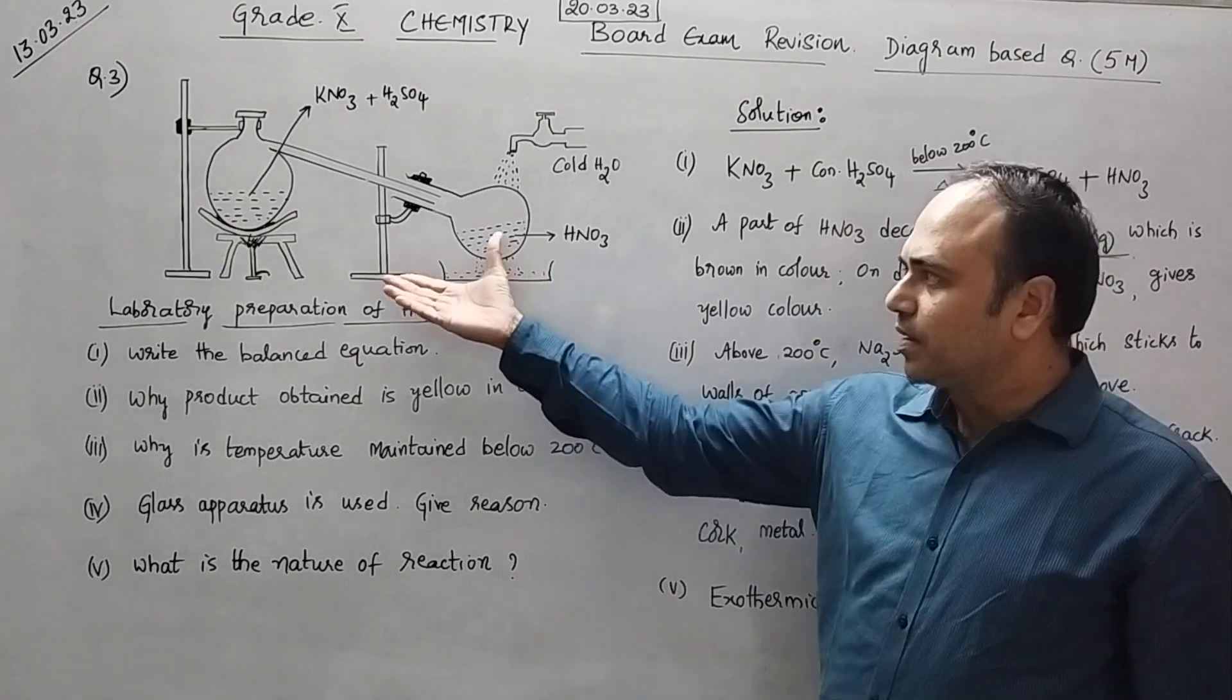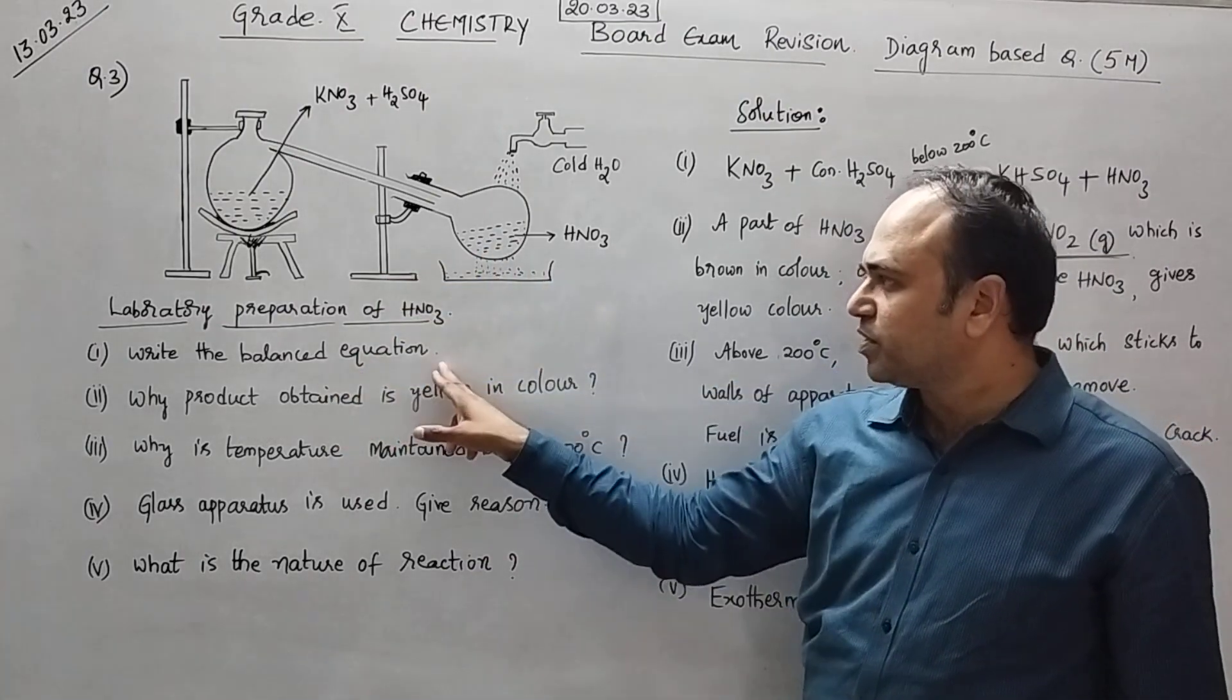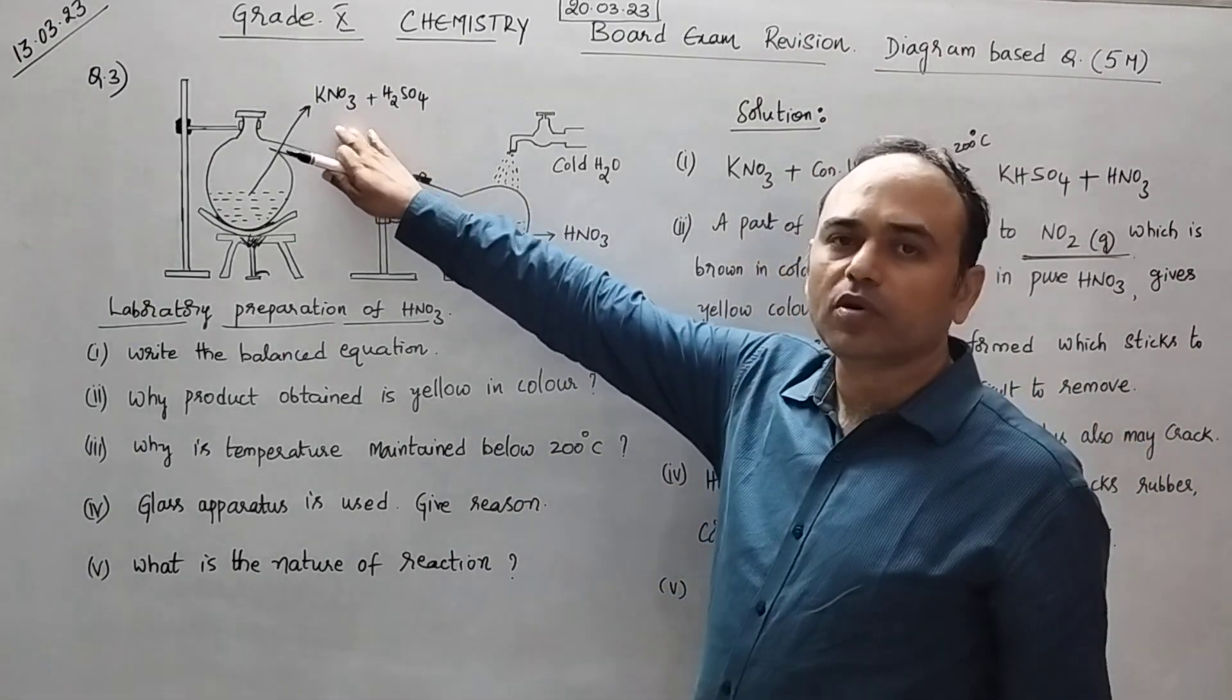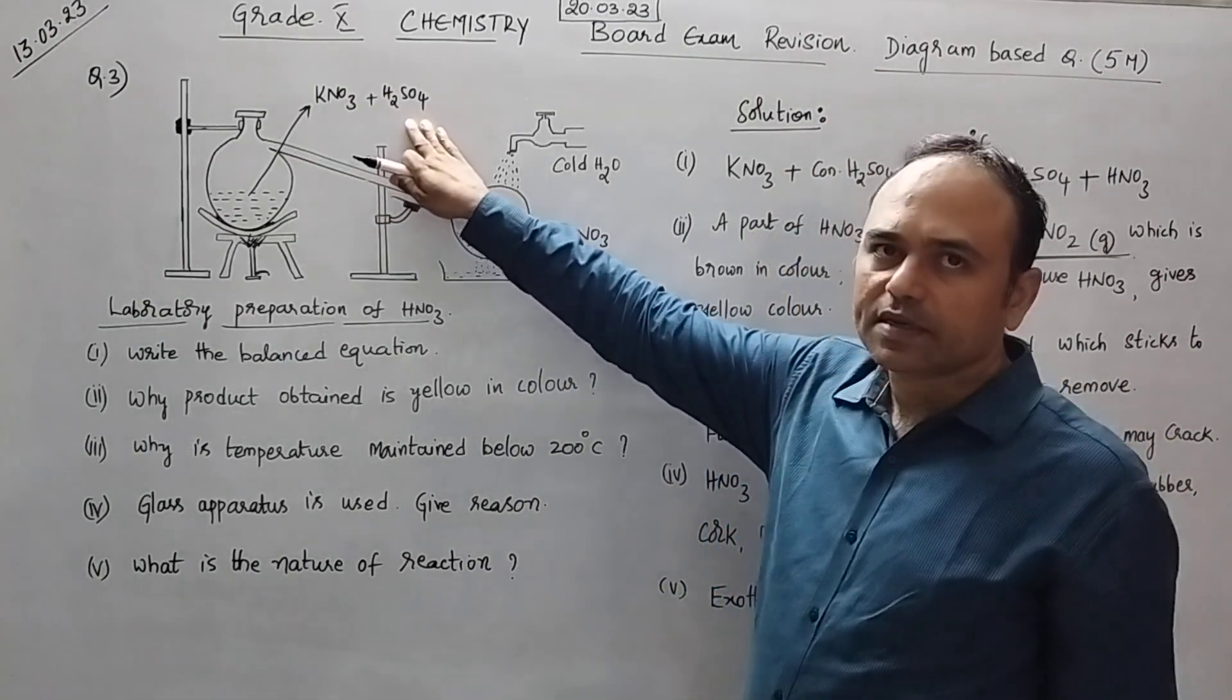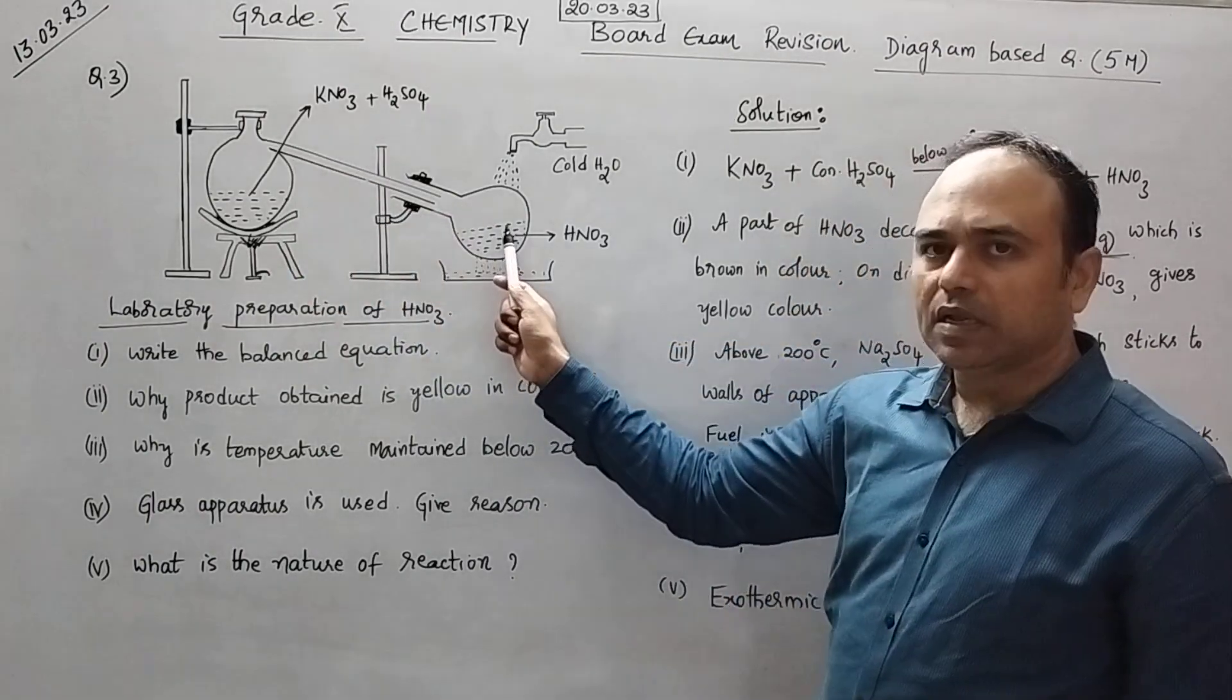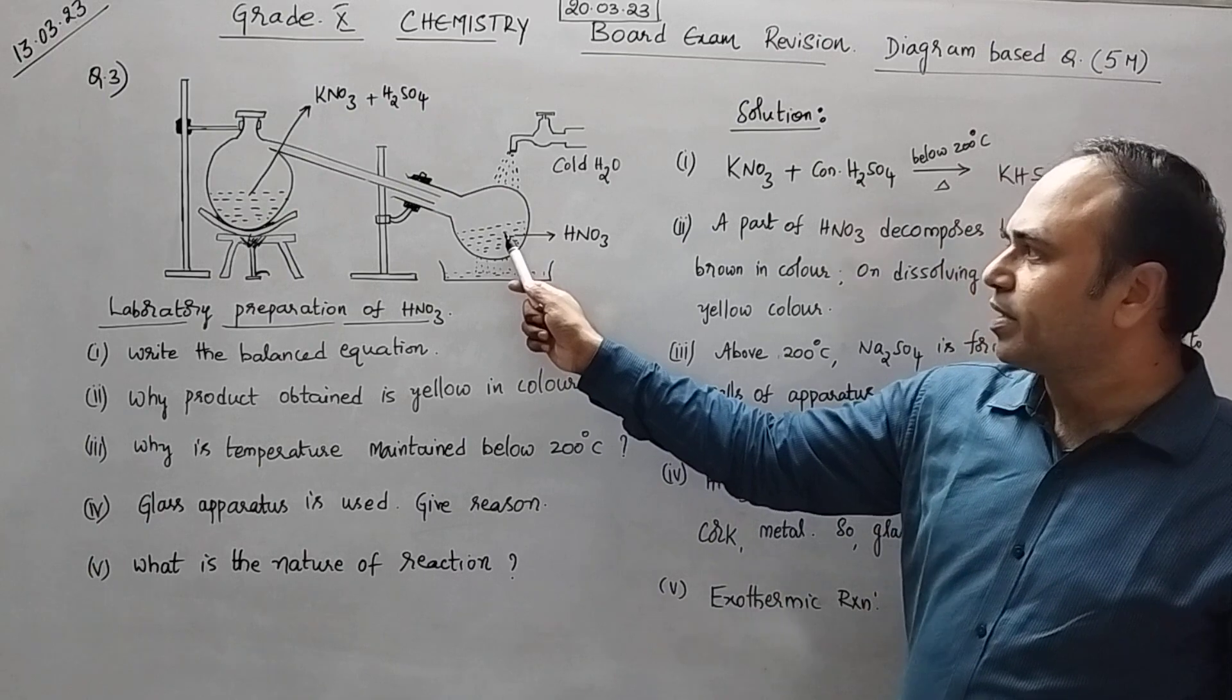So in this diagram they are asking, first one is balanced equation you have to write and you know that starting material is potassium nitrate or sodium nitrate and concentrated H2SO4. On heating, HNO3 is being liberated into this round bottom flask.